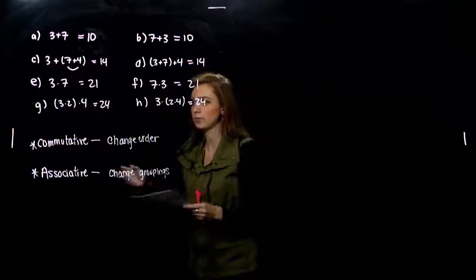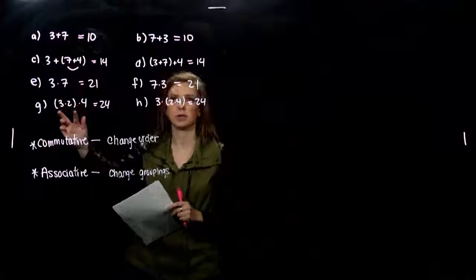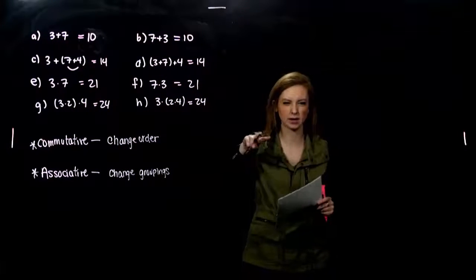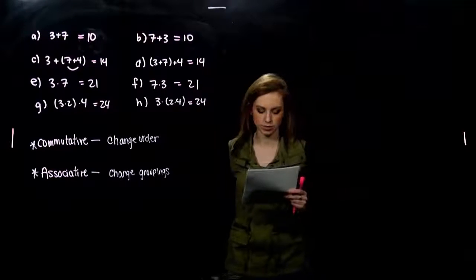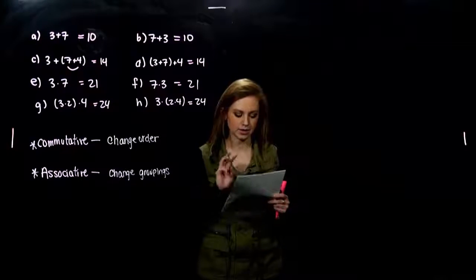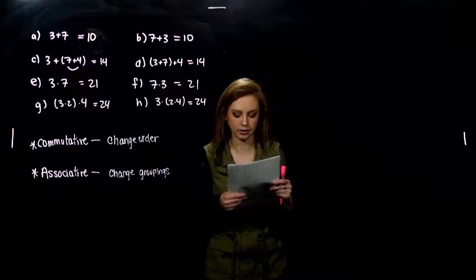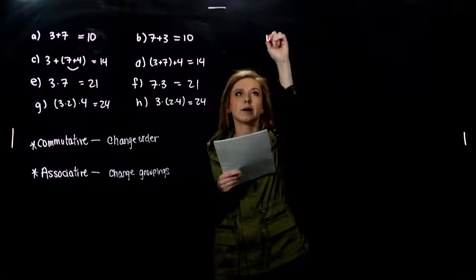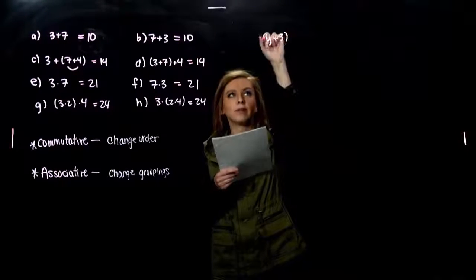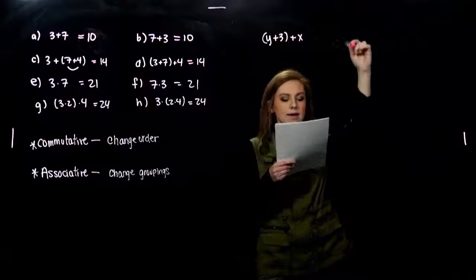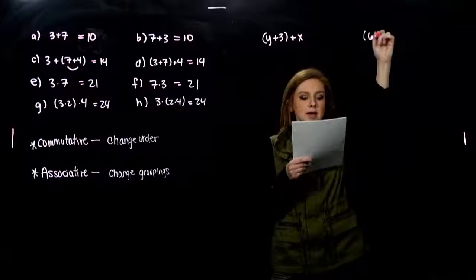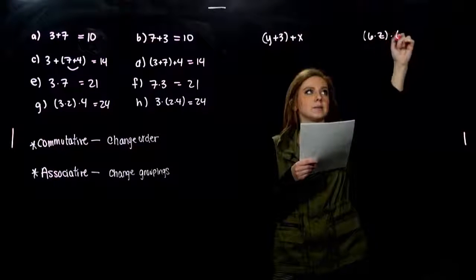With both addition and multiplication, that can happen. We're taking care of those two operations first. So we want to use commutative and associative laws to write at least three expressions equivalent to y plus three grouped together, plus x, and six times z grouped together, times t.